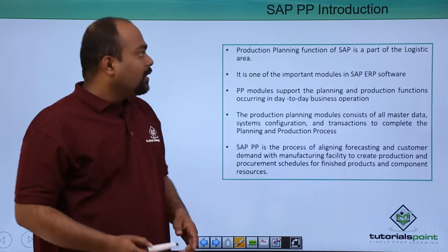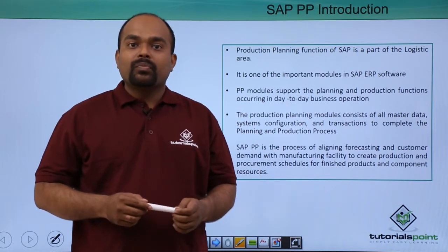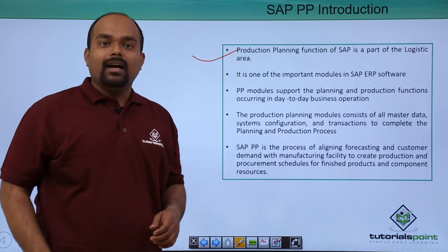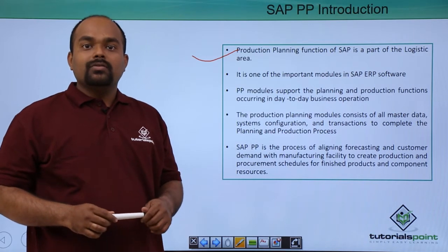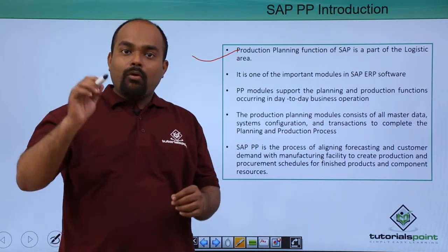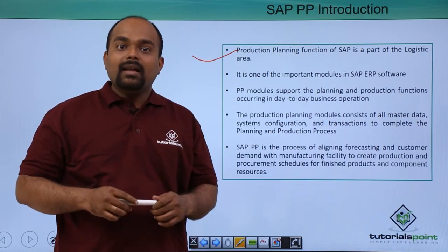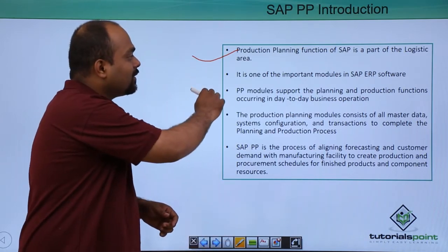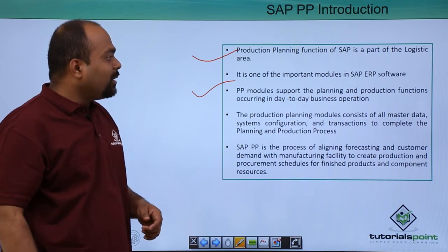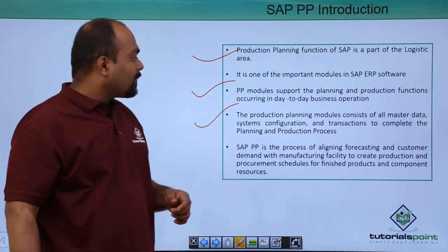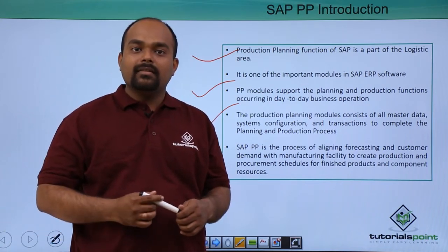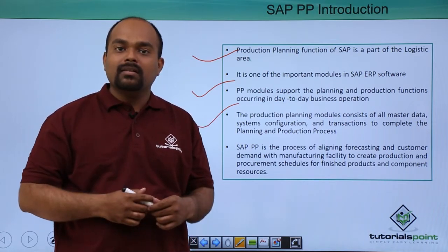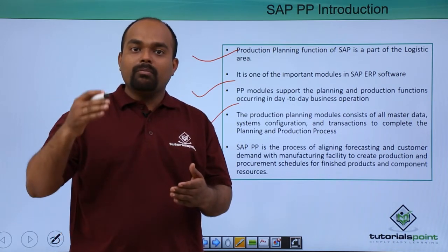SAP PP falls under the logistics area. In SAP PP there is production planning, and some master data is also required. The master data in SAP PP includes material management, work center, capacity, and routing. This master data is maintained in production planning.